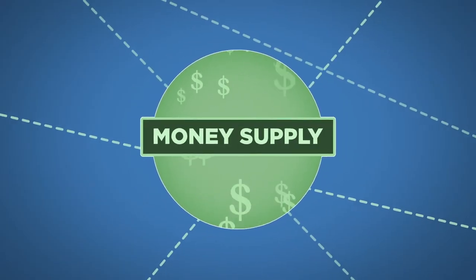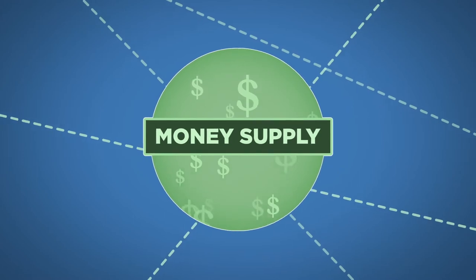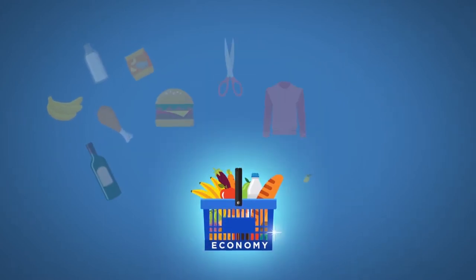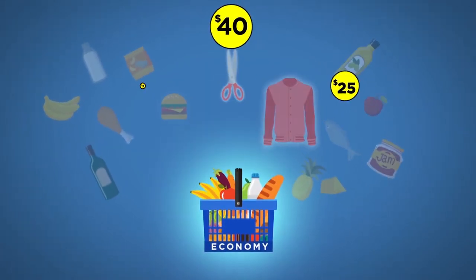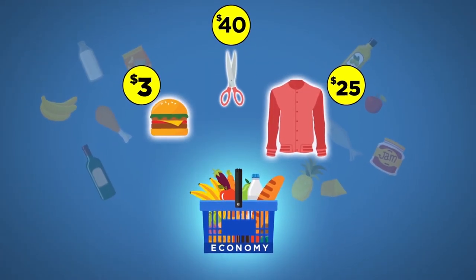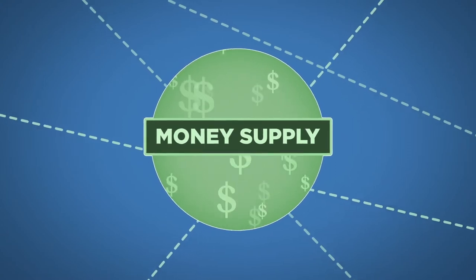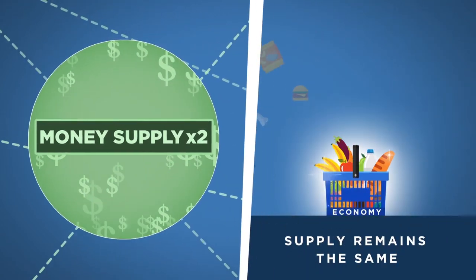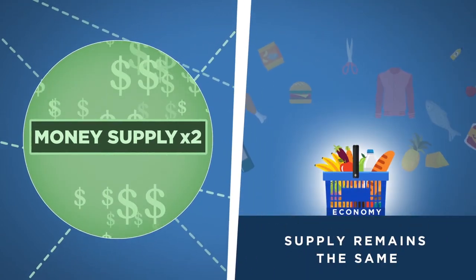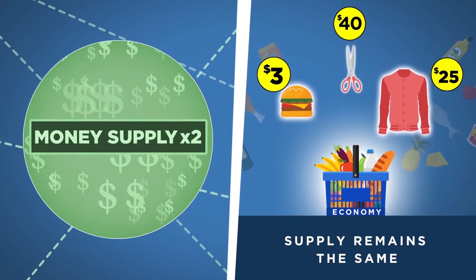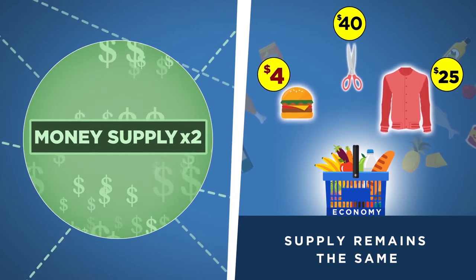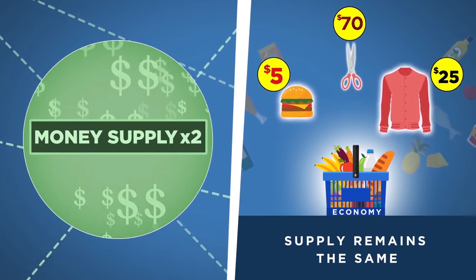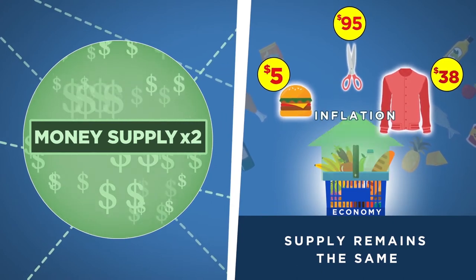Friedman argued that inflation was always caused by changes in the money supply compared to changes in the production of goods or services. Friedman observed that if the supply of money doubles while the amount of goods and services available in the economy remains the same, overall prices and wages will basically double.